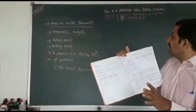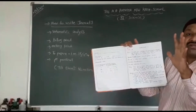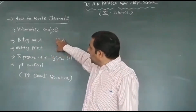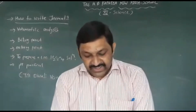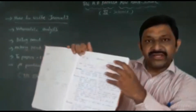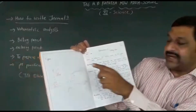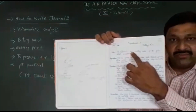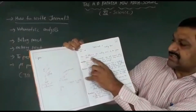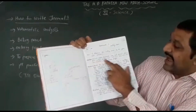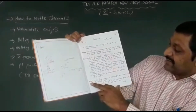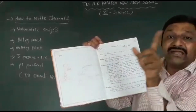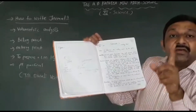Now for the second and third practicals — boiling point and melting point. Here is the melting point setup. The aim is: to determine the melting point of the given solid substance. In the single line page, write aim, apparatus, procedure, and precaution. You also have to draw the figure of the melting point apparatus in the blank page.